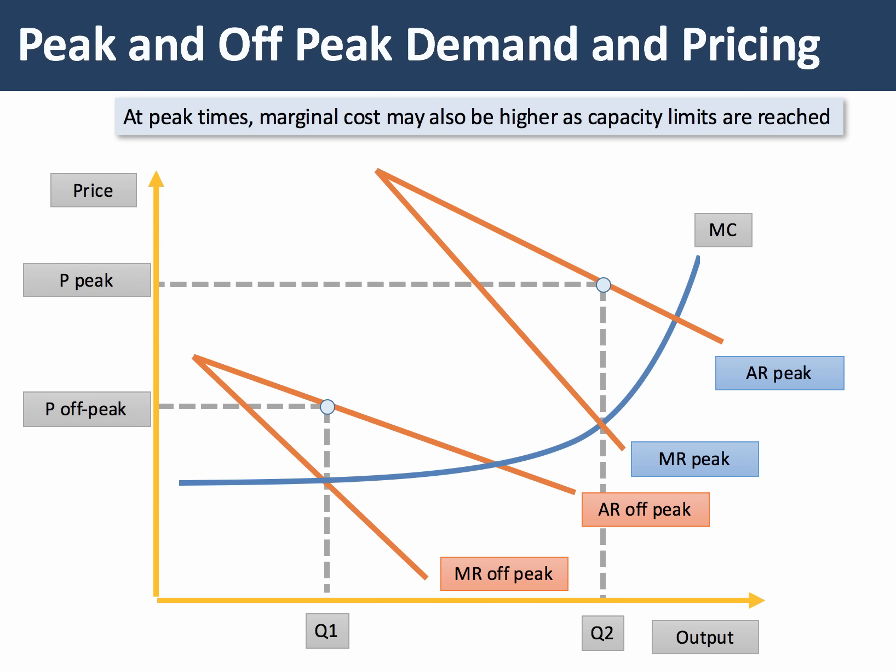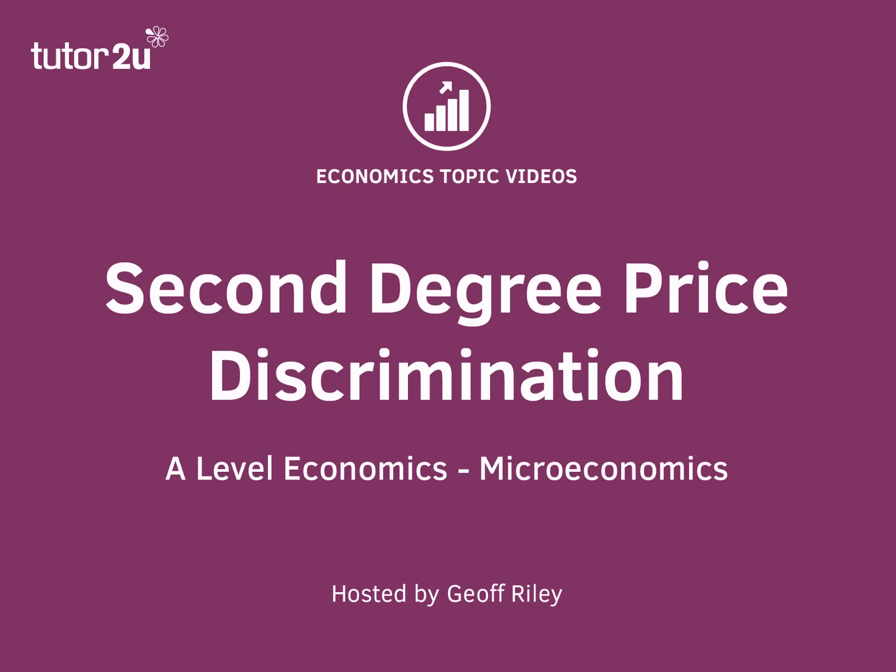One justification for this — shown in the diagram — is that the marginal cost of supply at peak times may be higher. For example, hotels and resorts may have to employ extra staff or pay more overtime when the resorts are full. So this has been a quick look at second degree price discrimination: businesses selling blocks or packages at cheaper prices, or businesses charging different prices at different times — peak versus off-peak pricing.